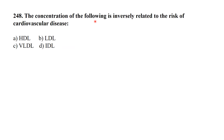The concentration of which of the following is inversely related to the risk of cardiovascular disease? The answer is HDL — high density lipoprotein, the good cholesterol. Higher HDL means lower cardiovascular disease risk. This MCQ has appeared before in different forms.